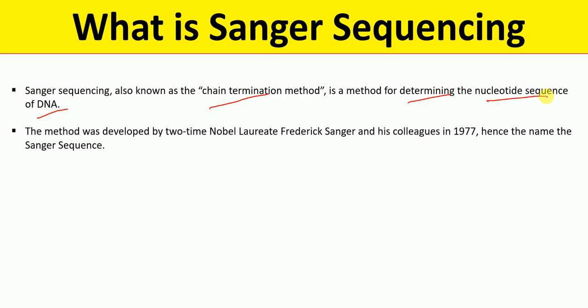This method was developed by two-time Nobel laureate Frederick Sanger and his colleagues in the year 1977, and hence the name Sanger sequencing — because it was developed by the scientist Sanger.